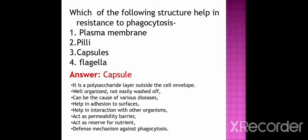Here we have also seen other options: plasma membrane, flagella, and pili. The function of plasma membrane: it acts as a permeability barrier and mechanical boundary of cells, nutrient and waste transport, location of many metabolic processes such as respiration and photosynthesis, and helps in detection of environmental cues for chemotaxis. Pili helps in bacterial mating. Flagella helps in the movement of bacteria.